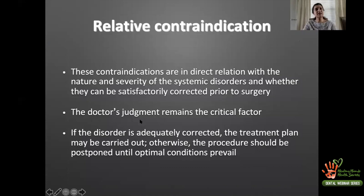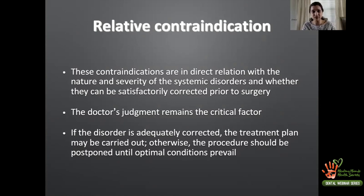Relative contraindications are slightly milder than absolute. These contraindications are in direct relation with the nature and severity of systemic disorders and whether they can be satisfactorily corrected prior to surgery. The doctor's judgment remains a critical factor. If the disorder is accurately corrected, the treatment plan may be carried out; otherwise, the procedure should be postponed until optimum conditions prevail.